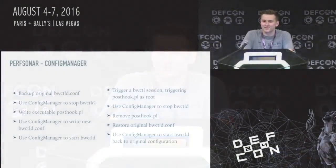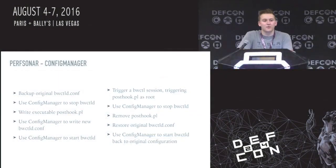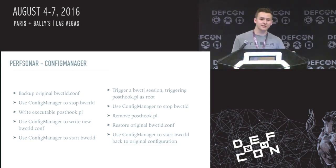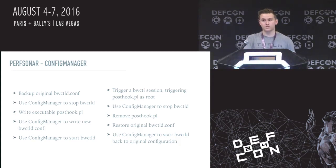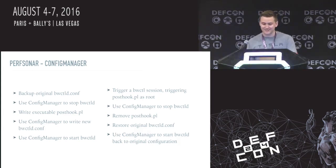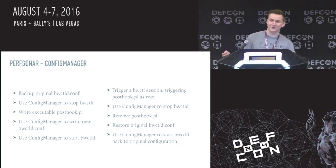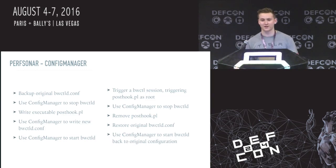To actually do that, it's a little more complicated — we don't want to let the network administrator notice that something's broken. So we have to do this as quickly as possible and then restore the original configuration quickly. The steps are: back up the original config, stop bandwidth control, write our post hook, write the new bandwidth control config, start bandwidth control, trigger a session (which must be successful to trigger our post hook), stop bandwidth control, remove our post hook to delete our evidence, and restore the original bandwidth control config, then start it back up again.